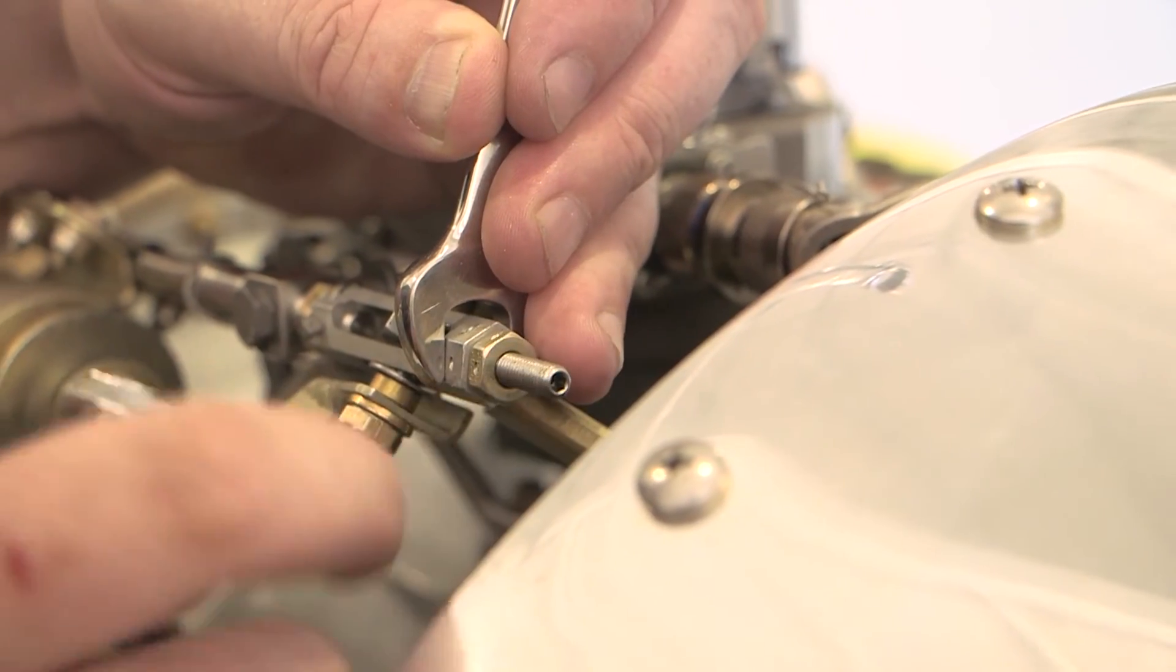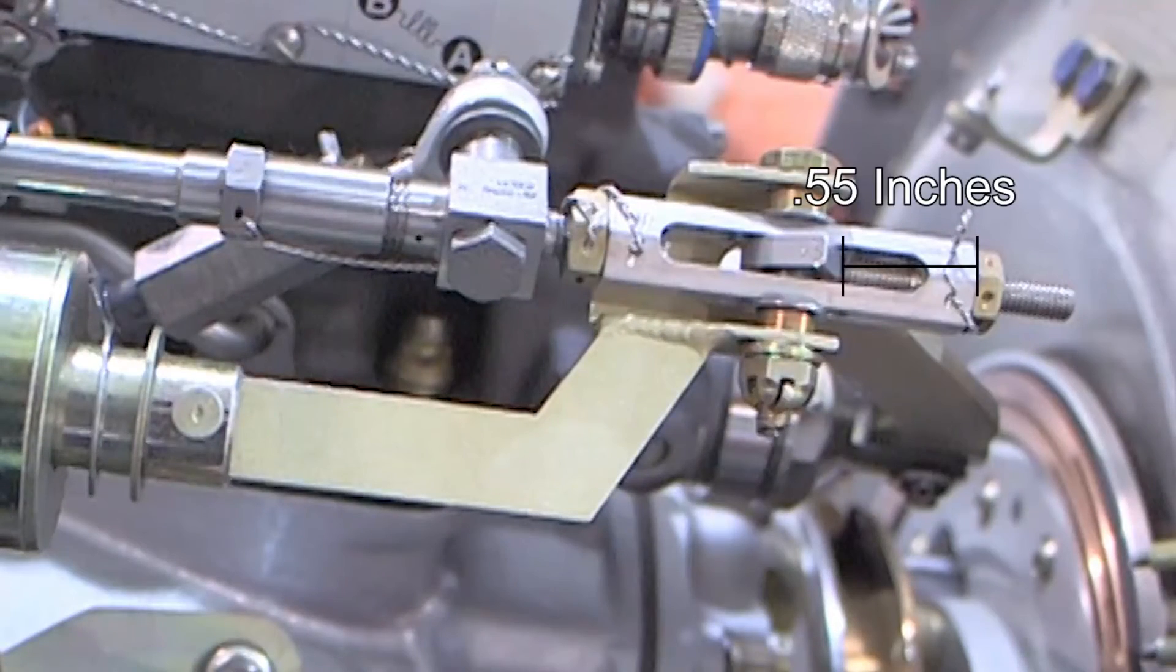Set the torque adjusting screw so that it penetrates 0.55 inch into the clevis from the outside face. At this point, the end of the screw should be visible in the slot of the clevis.